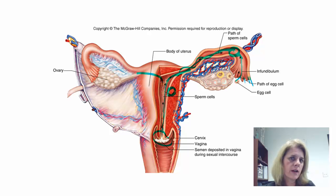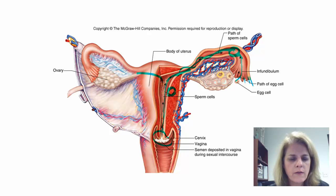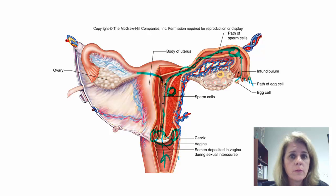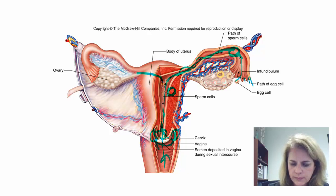One thing to mention: when you look at the vagina in lab, there are two blind pouches called the fornices. Some sperm don't quite make it through the cervical opening and get lost in the fornix. So you lose a lot there — not all of them will make it through the cervix into the uterus.